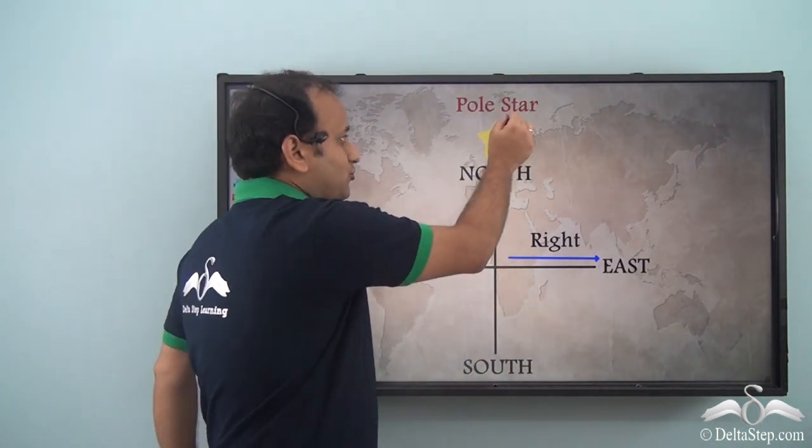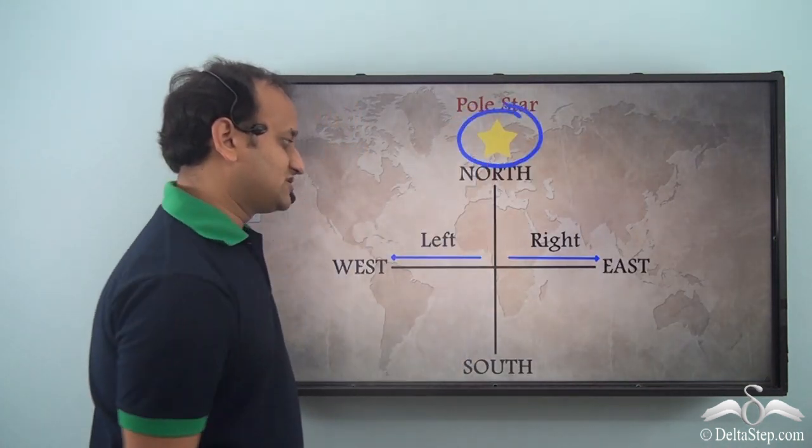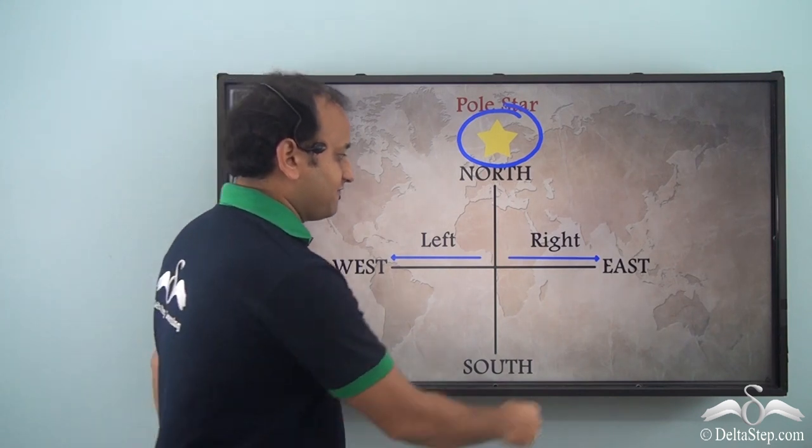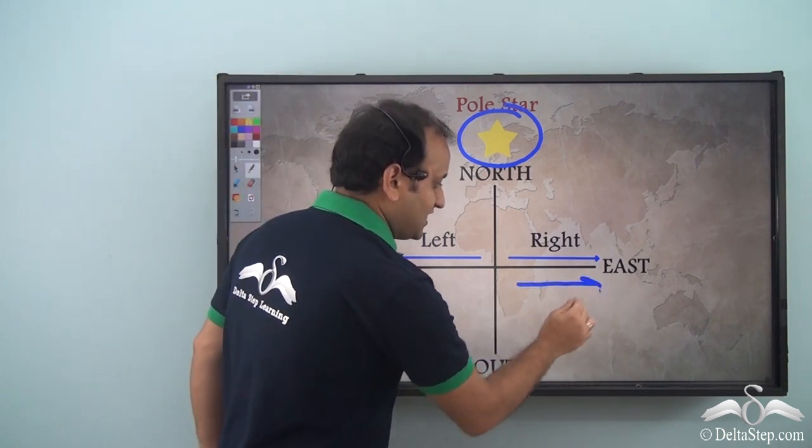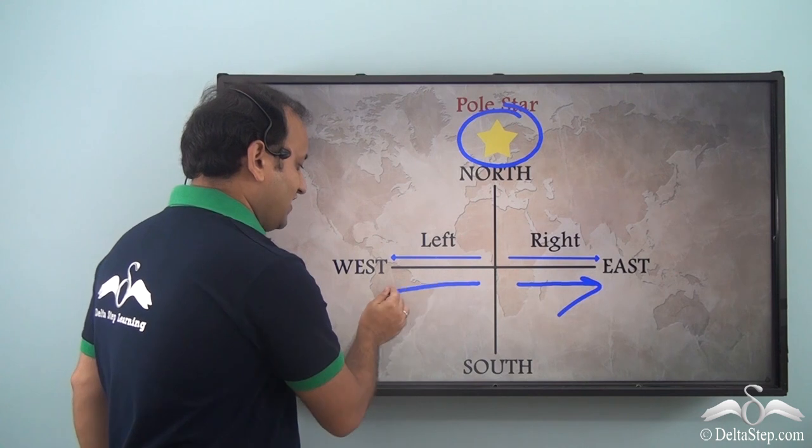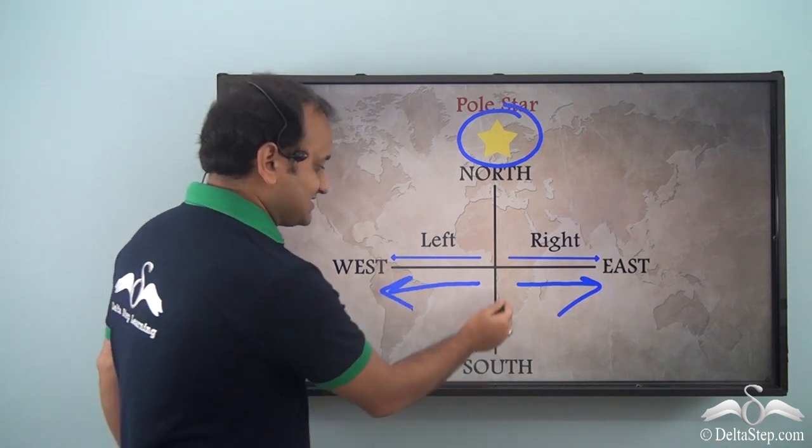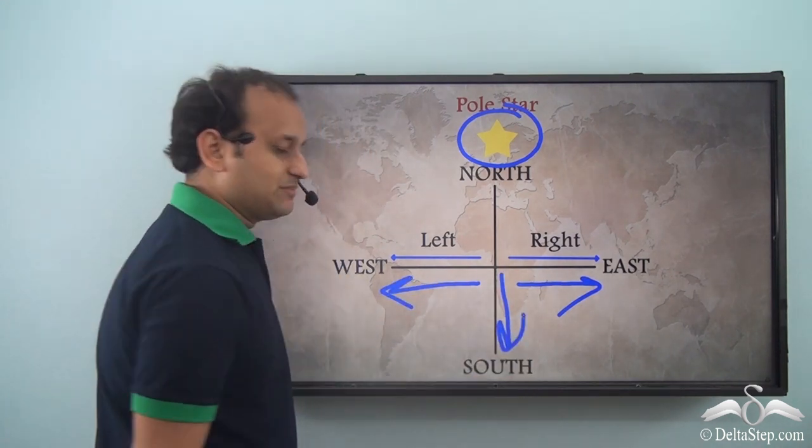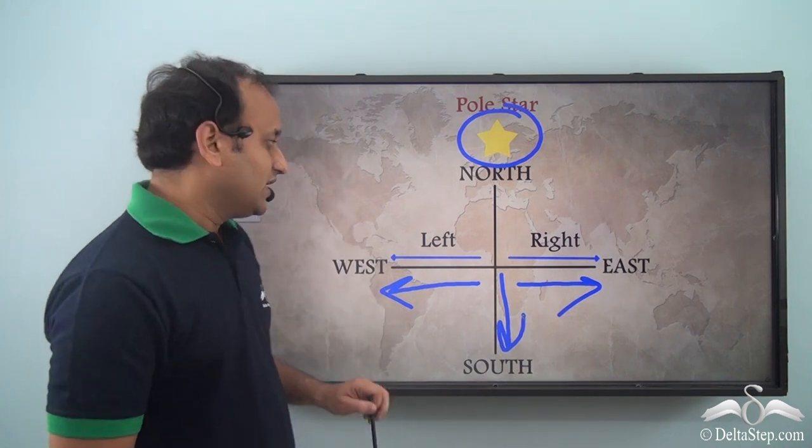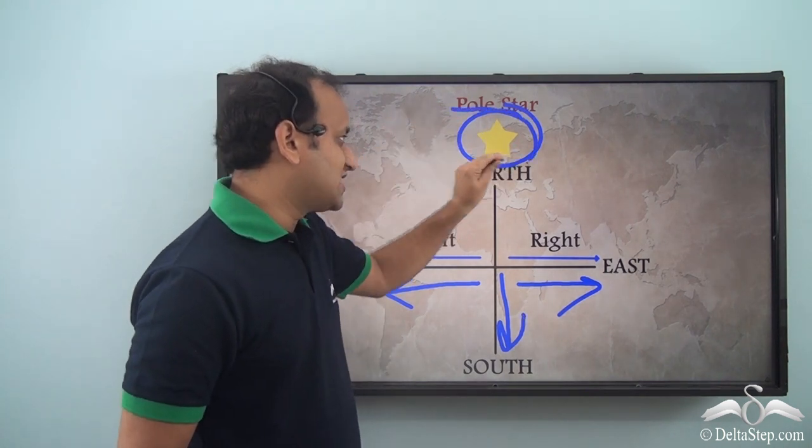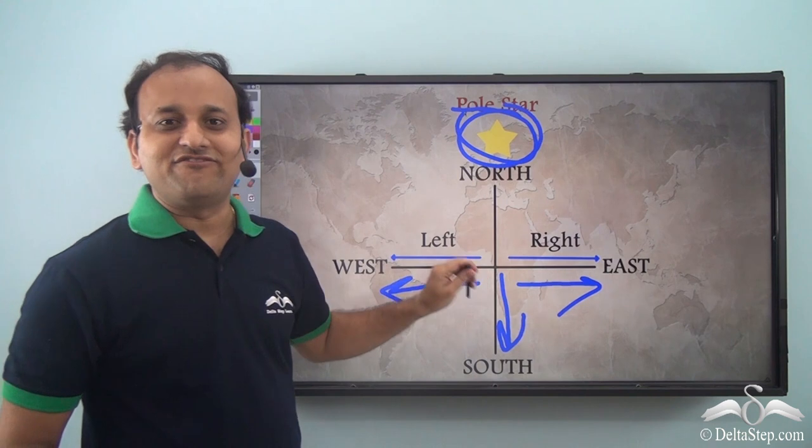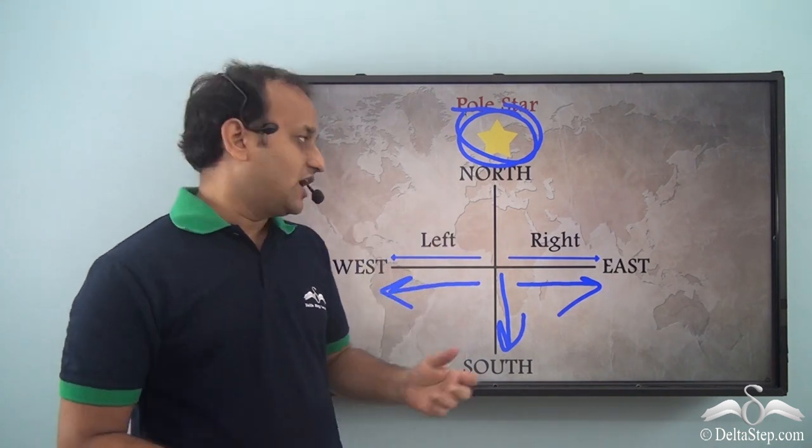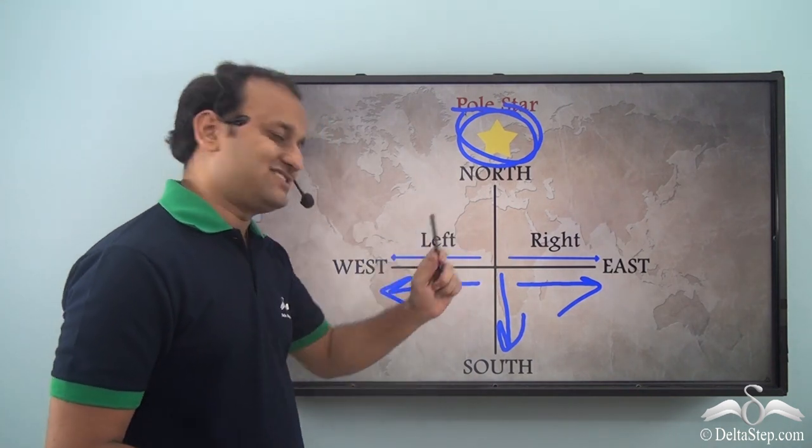So using the pole star you can actually know where is the north direction. You see, if you have the pole star and you face the pole star, then you will have east to your right and west to your left and south will be just behind you. So with the help of pole star at night also you can find the different directions which are north, south, east and west.